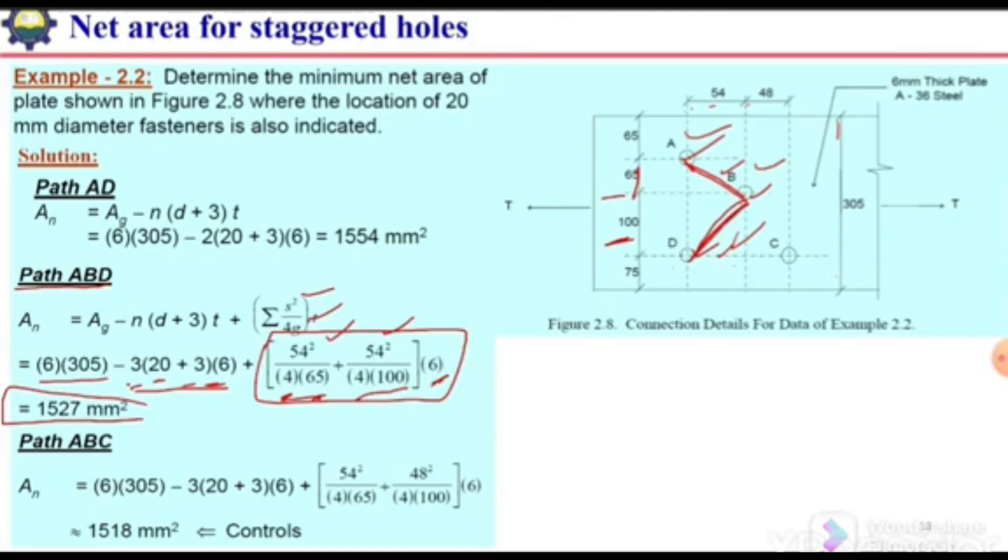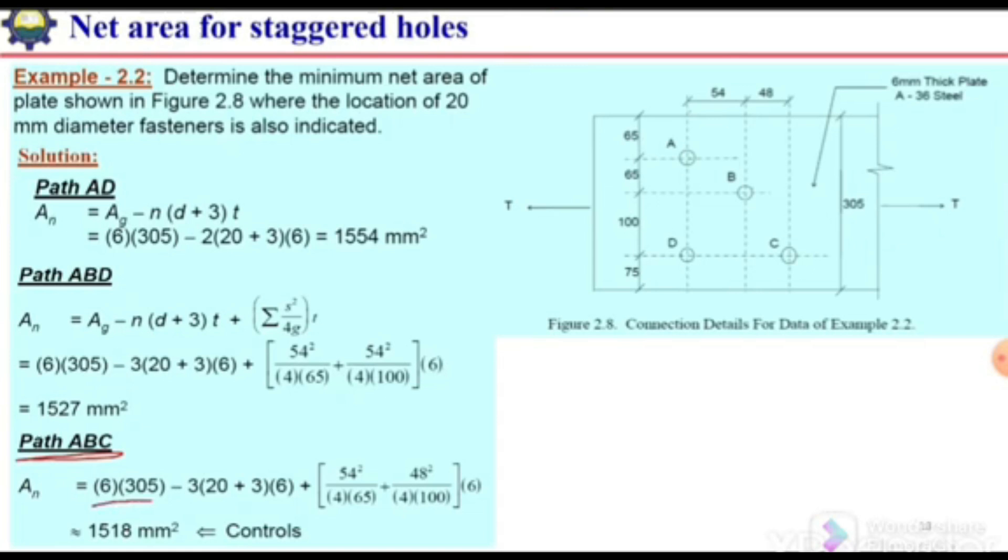Next is path ABC. For path ABC, again the gross area will be 6 times 305, and we need to subtract the area of these three holes. We have three holes, each with 20 millimeter diameter bolt, then add 3 for the allowance times the thickness. This will be the area of holes.